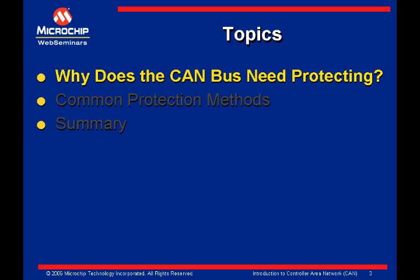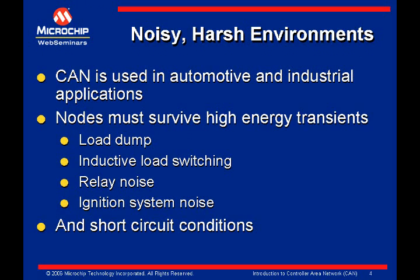So why does the CAN bus need extra protection anyway? Doesn't the transceiver provide adequate protection? CAN was originally developed for data communications in the automotive industry — a noisy, harsh environment. CAN nodes are subject to high energy transients, such as load dump, inductive load switching, relay noise, ignition switching, etc. The most popular physical layer in CAN is specified by ISO 11898. ISO 11898 compatible transceivers do a good job of filtering out noise coupled on the bus and protecting the node from energy spikes and short circuit conditions.